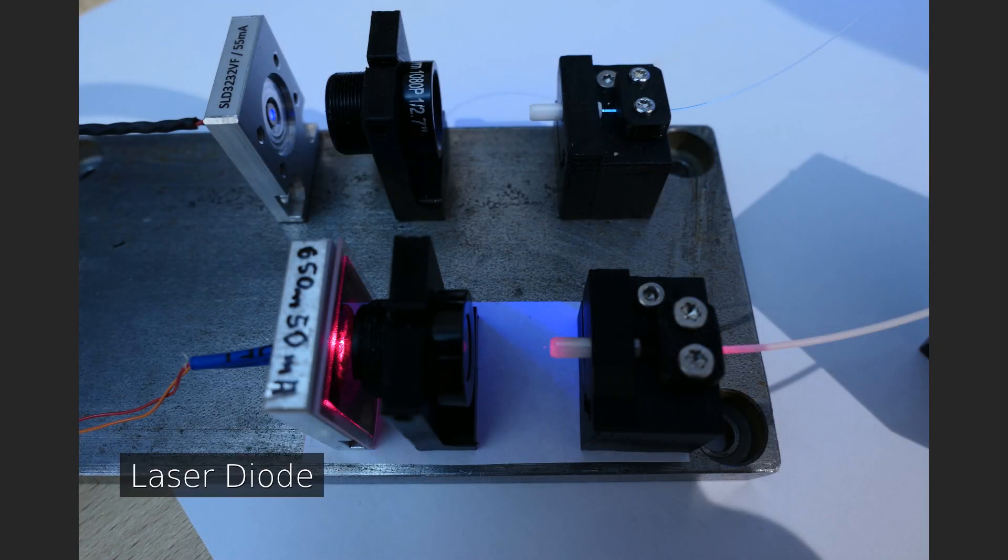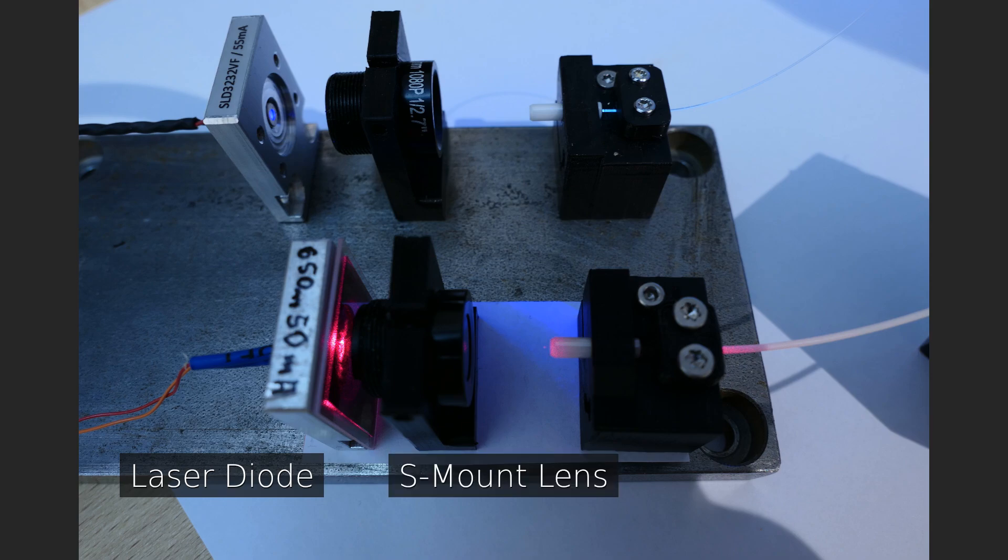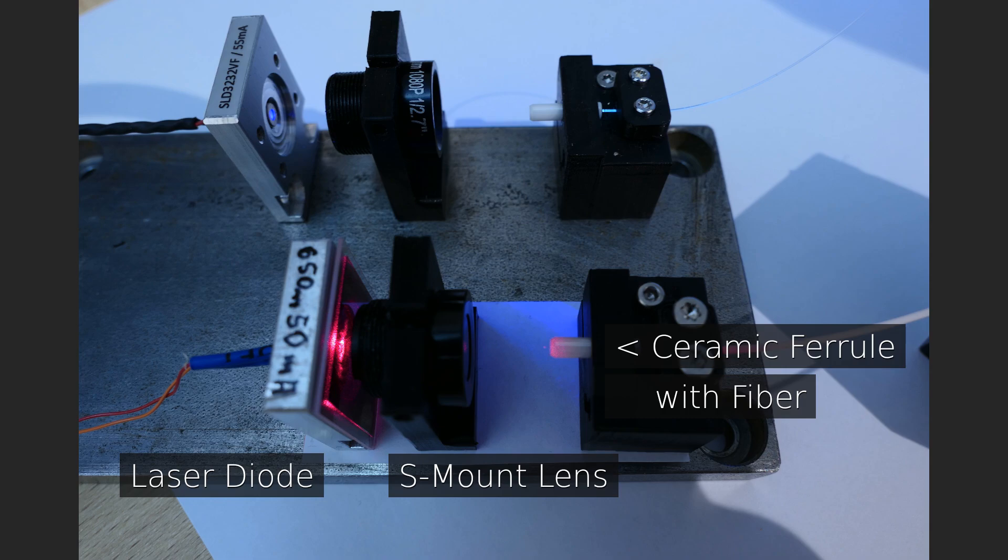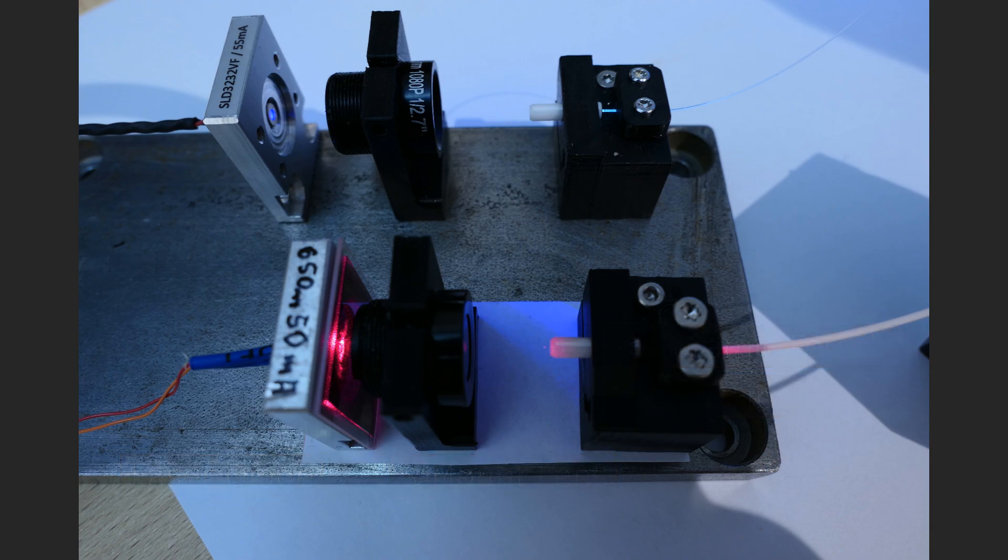To couple light into a fiber, it has to be tightly focused onto the end of the fiber core. S-mount camera lenses can be used for this task. They are quite cheap, have AR coated surfaces and low spherical aberrations. They can therefore focus the laser light to a very small point of a few micrometers in diameter.